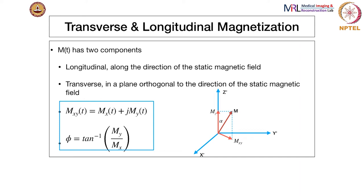Next, we will look at some nomenclature: transverse and longitudinal magnetization. The magnetization M has two components we can think of. One is the longitudinal component, which is along the direction of the static magnetic field — the z-axis, which is the direction of B0. The other is Mx and My, for which there is a sinusoidal equation of motion. That in-plane component, which we call Mxy, is written in complex form as Mx + j*My. There is also a phase angle alpha = arctan(My/Mx).